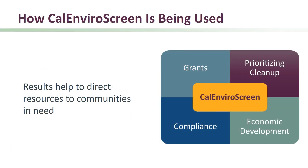CalEnviroScreen is being used for a variety of purposes. CalEnviroScreen results help to direct resources to communities in need. These resources include funding grants for sustainable growth or transportation needs in these communities. We'll identify other uses of CalEnviroScreen in later modules.